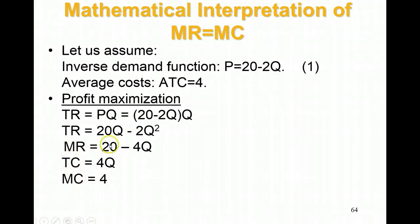I have my MR and my MC, so I'm going to set them equal. I'm setting my marginal revenue equation, 20 minus 4Q, equal to my marginal cost of 4, and solve for Q.